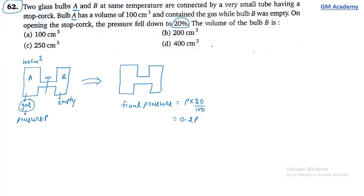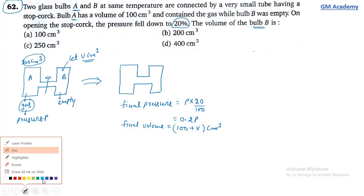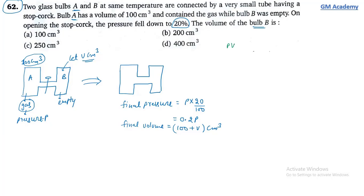Volume of A = 100 cm³, volume of B = V cm³. Final volume = 100 + V cm³. Total moles remain constant. Using PV = nRT, number of moles = PV/RT. Temperature is the same in both cases so T cancels.